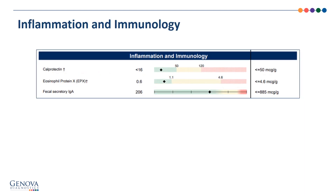The markers of inflammation and immunology include calprotectin, which is a neutrophil-mediated inflammatory marker that is elevated with inflammatory states such as inflammatory bowel disease or cancer. Eosinophil protein X is an eosinophil protein marker that may indicate an allergic response or a response to a parasite. Secretory IgA is the chief antibody of the lining of the GI tract and indicates an immune response, possibly to a food or to a pathogen.